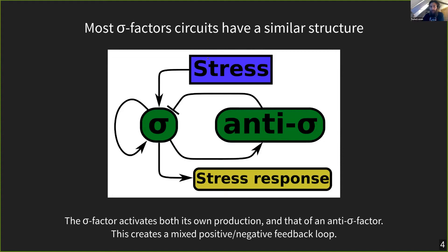The sigma factor is activated by stress and activates the stress response — nothing surprising. The sigma factor typically activates its own production, creating a positive feedback loop, but will also activate the production of an anti-sigma factor, and the anti-sigma factor will deactivate the sigma factor. Many of these stress response circuits have this mixed positive-negative feedback loop. What we want to do here is figure out whether it's actually possible to explain all of the different behaviors we see among sigma factor circuits with just this core circuit.